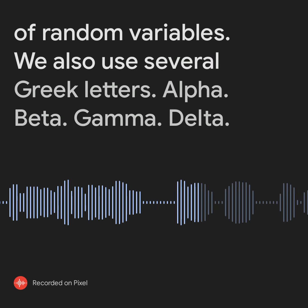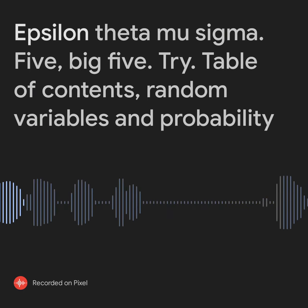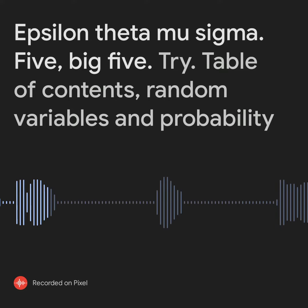We also use several Greek letters: alpha, beta, gamma, delta, epsilon, theta, mu, sigma, phi, big phi, and chi.